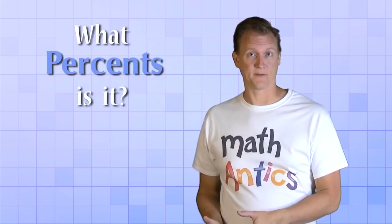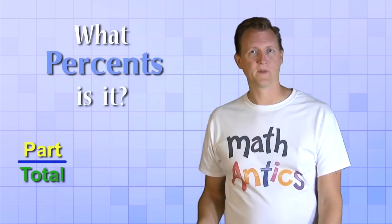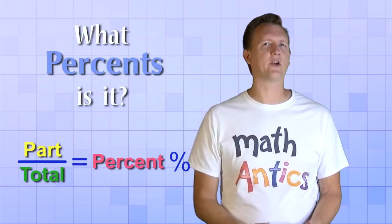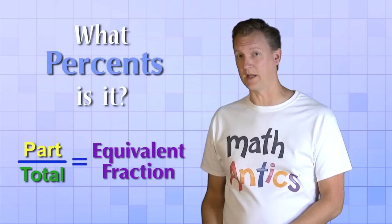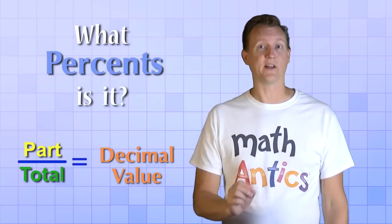All right, so that's how you find out what percent is it. You make a fraction from the part that you have and from the total, and then you convert that fraction into its percent form, either by figuring out what the equivalent fraction would be, or by just dividing to get the decimal value and turning that into a percent.